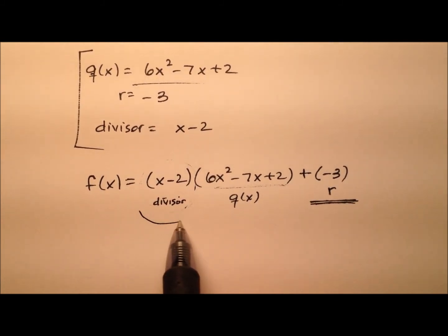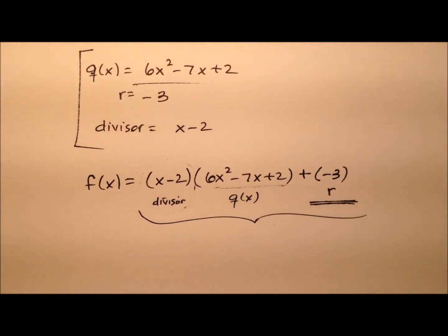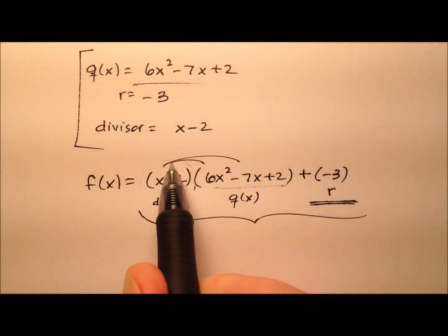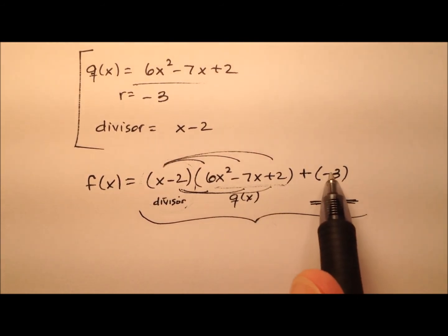Okay, so let's go ahead and multiply all this back out. And I'm going to show you that we should end up with our f(x) once again. So we'll go ahead and distribute through this x and then this negative 2. And then when I'm done, I'll add this negative 3, which was our remainder.